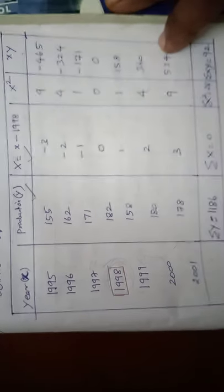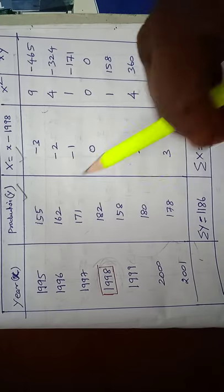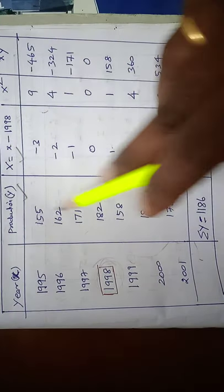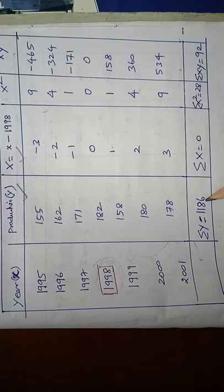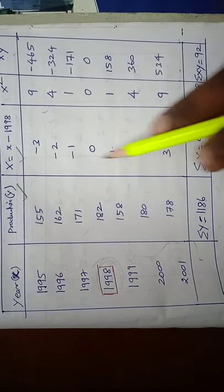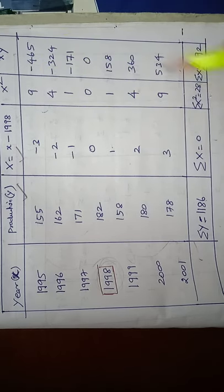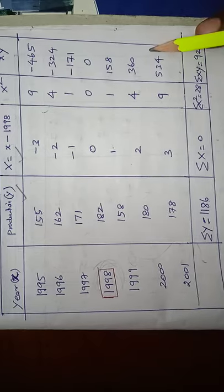We have to sum all the columns. First column, summation of all the Y values. So sigma Y equal to 1186. Sigma X values are 0, adding all the values become 0. Sigma X square values are 28. Sigma XY values are 92.